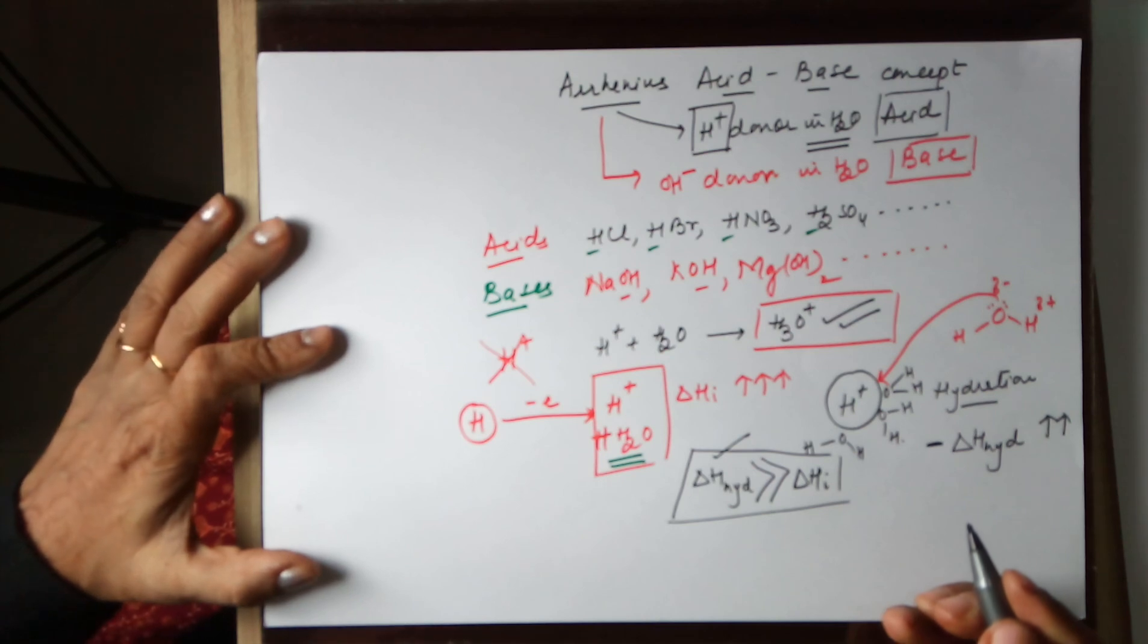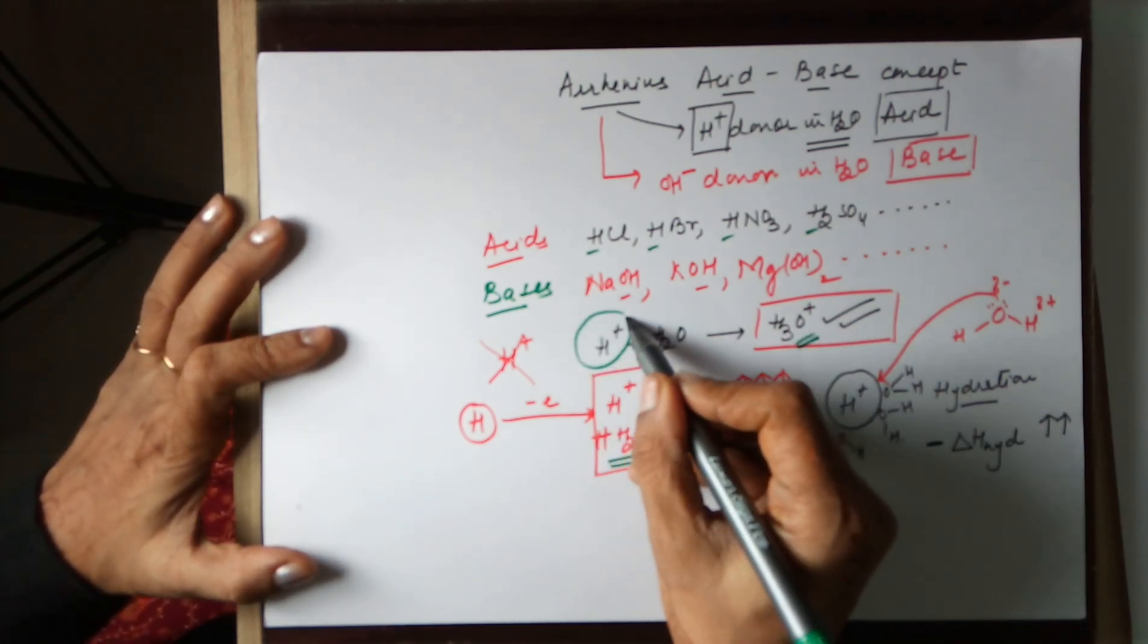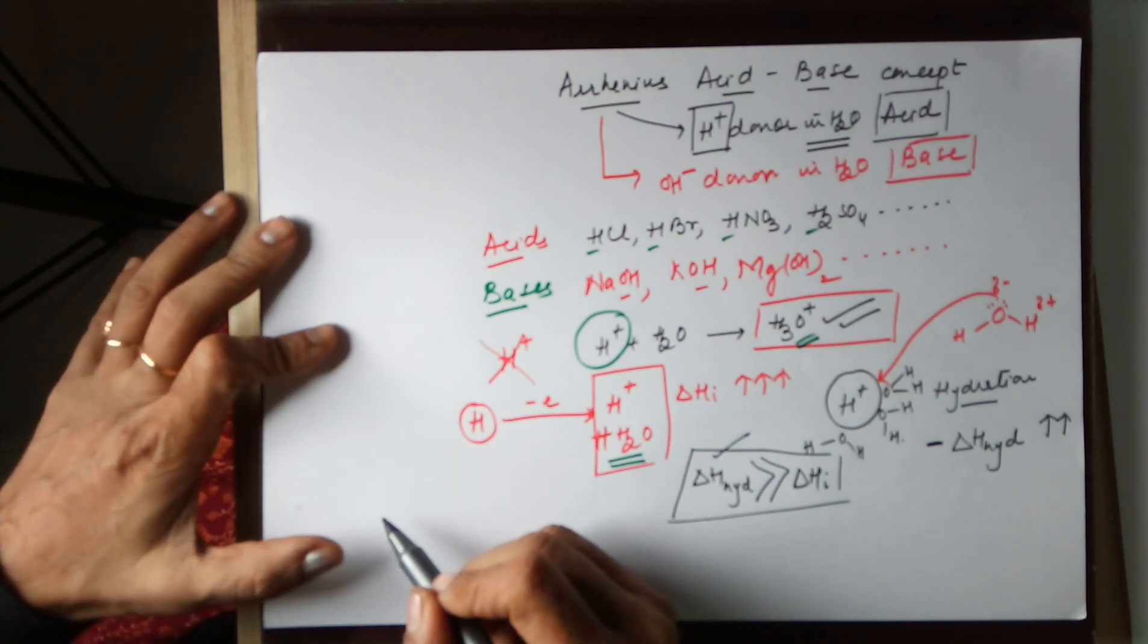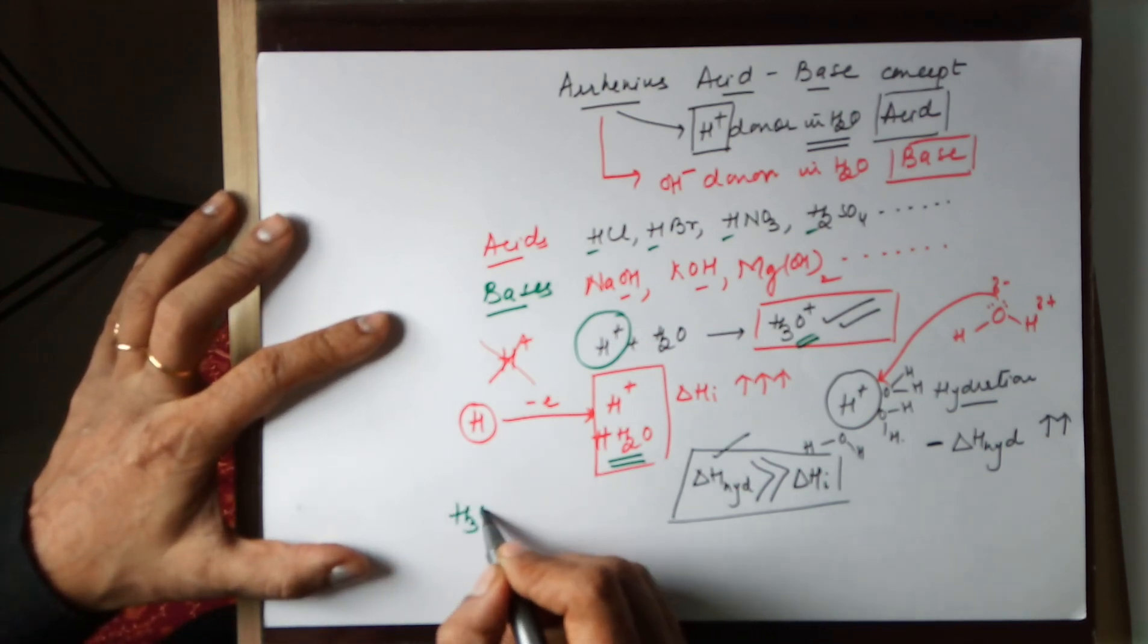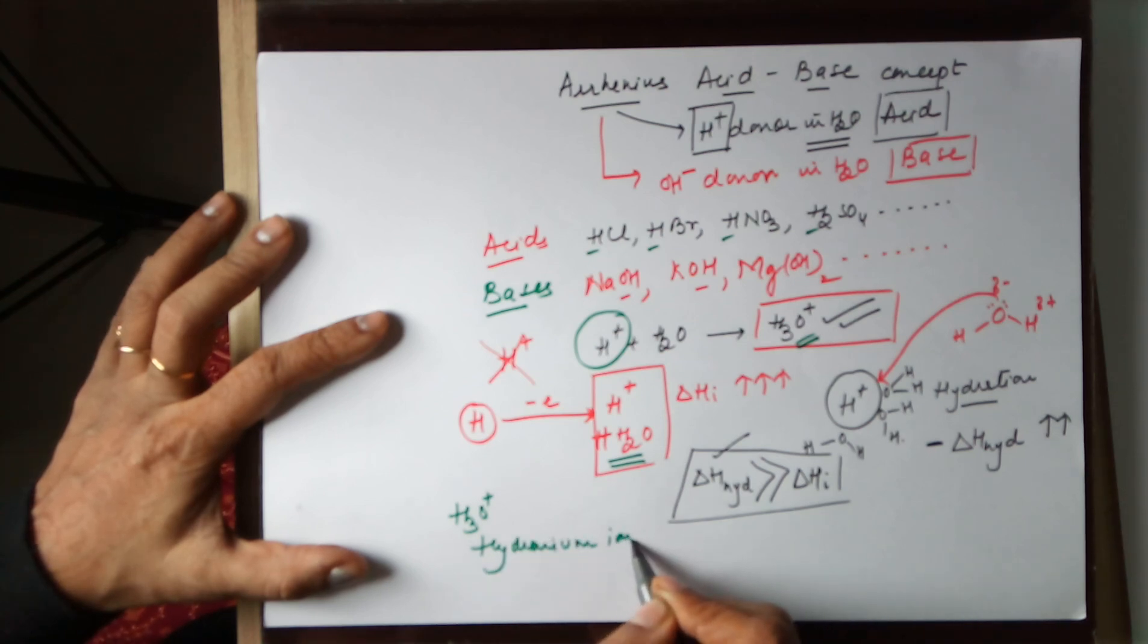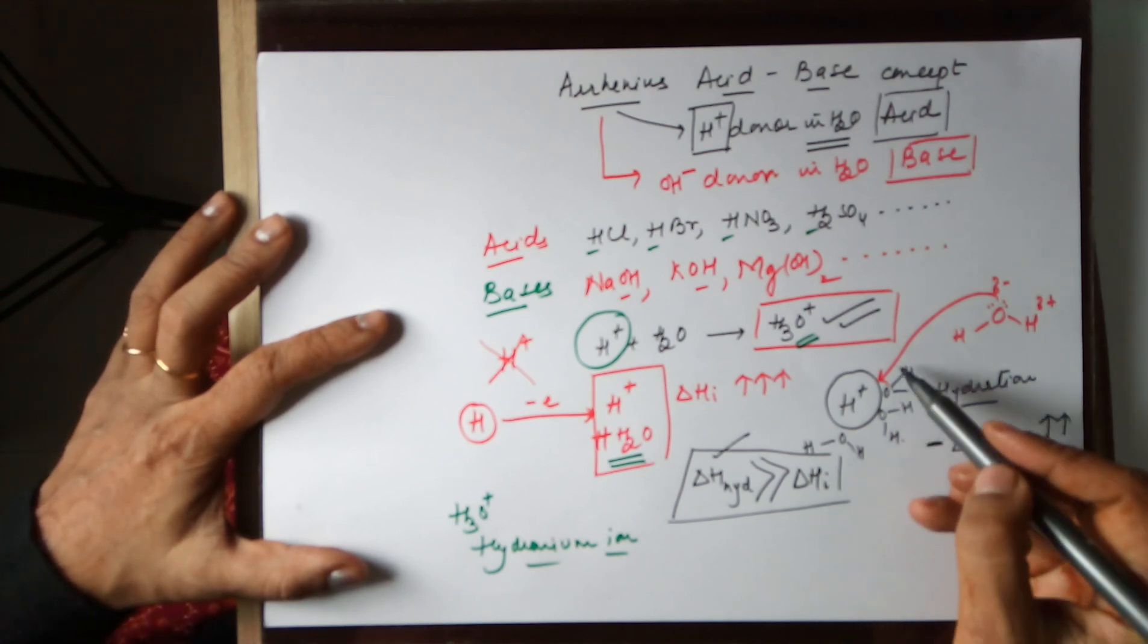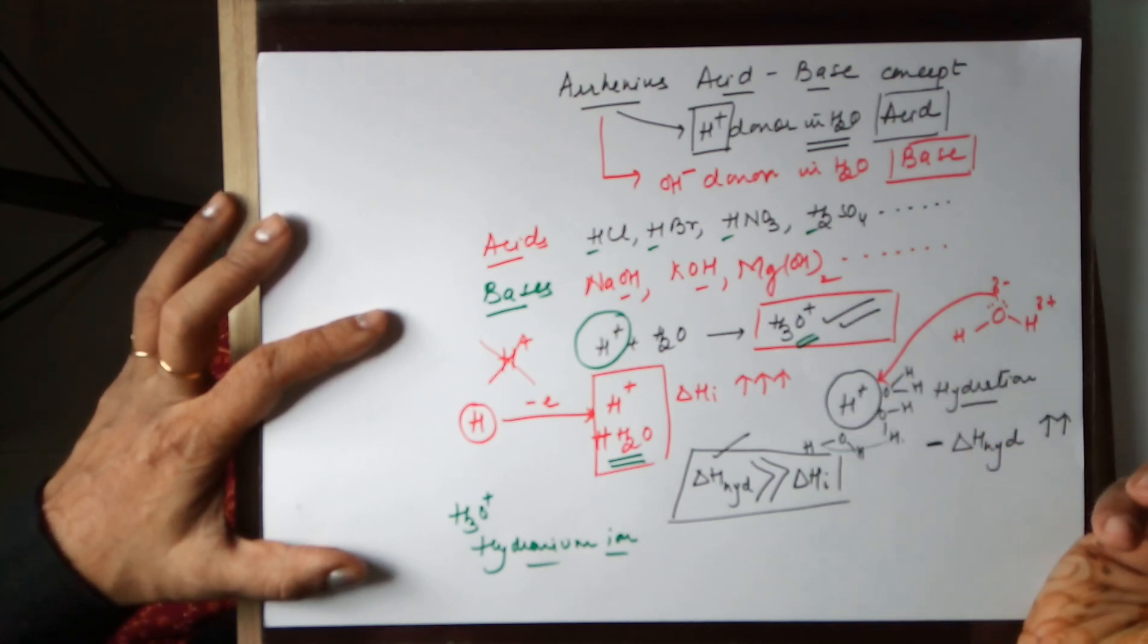Hence, it is correct to write hydronium ion and not H+. This hydronium ion is equivalent to H+ as the formation would only happen in the presence of water. Water provides the energy required to remove the electron from hydrogen to lead to the formation of H+ in water.